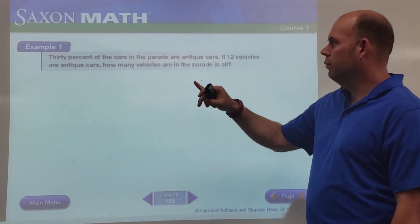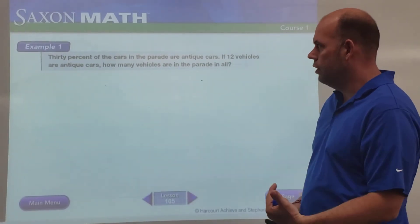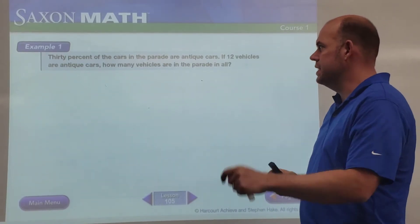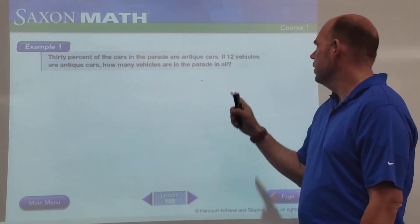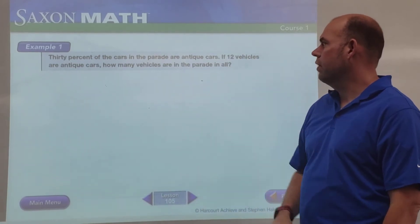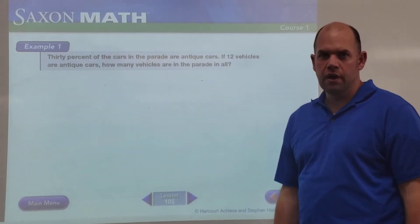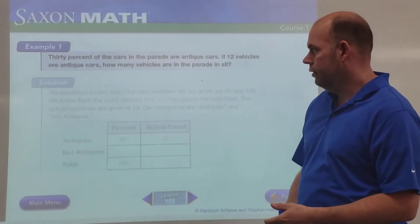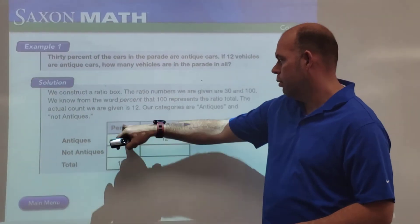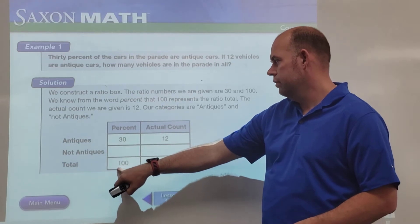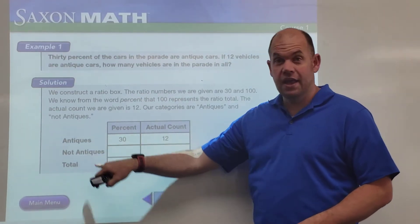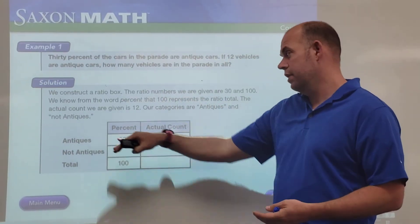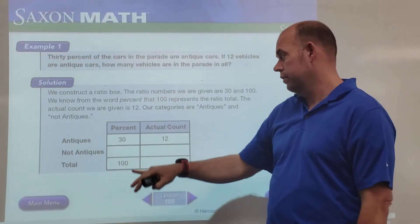Now here we have 30% of cars in the parade are antique cars. So 30 is the antique and 100 is the total. If 12 vehicles are antique cars, how many vehicles are in the parade in all? We're going to set up a table here. They've done it for us, so we have our percent, 30 out of 100, antiques and not antiques. Now they had to add 'not antiques' because they didn't give a number for that up here.